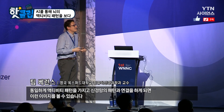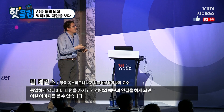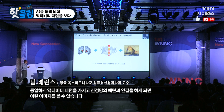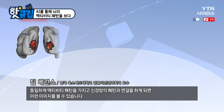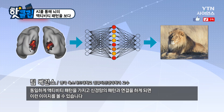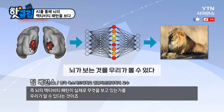We can take the same pattern of activity and try to learn or understand the relationship between the pattern of activity in the brain and the pattern of activity in the network, and then produce an image. And this is really working amazingly well now.